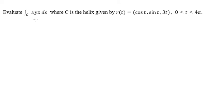Evaluate this iteration where C is a helix given by r(t) equals cos t, psi t, 3t, and the range is from 0 to 4 pi.